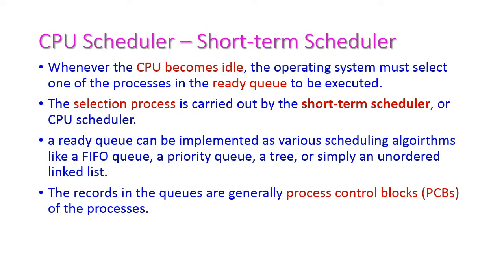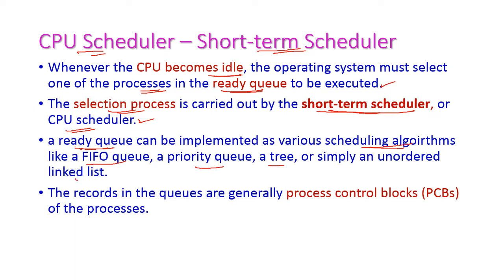The next concept is the CPU scheduler, otherwise called the short-term scheduler. Whenever the CPU becomes idle, the operating system should immediately select one process from the ready queue to execute. This selection is carried out by the short-term scheduler. The ready queue can be implemented using various scheduling algorithms — first come first serve, priority queue, or an unordered linked list — to select a process and assign it to the CPU. The records in the queue are generally the Process Control Block of each process.